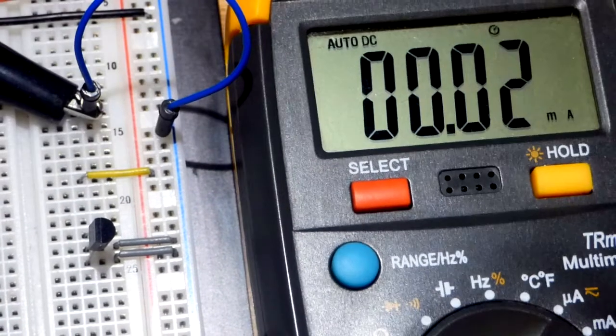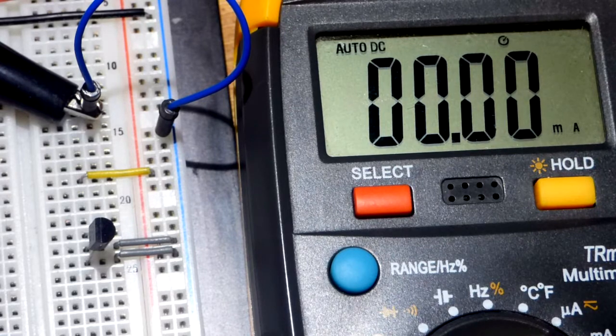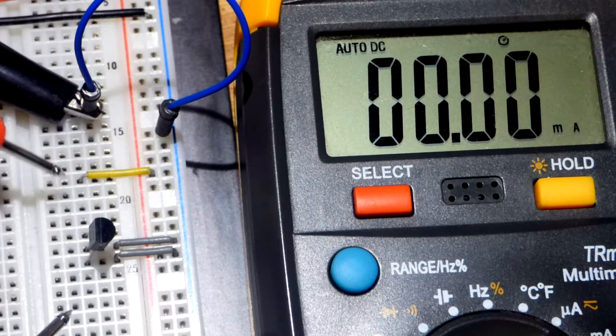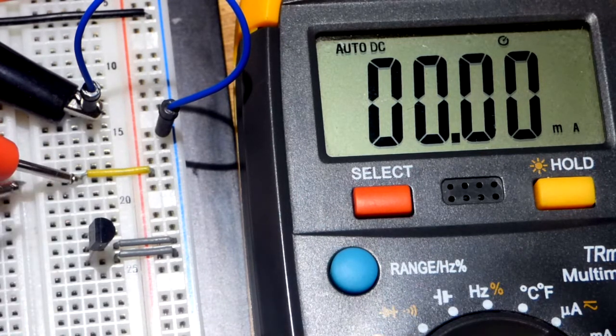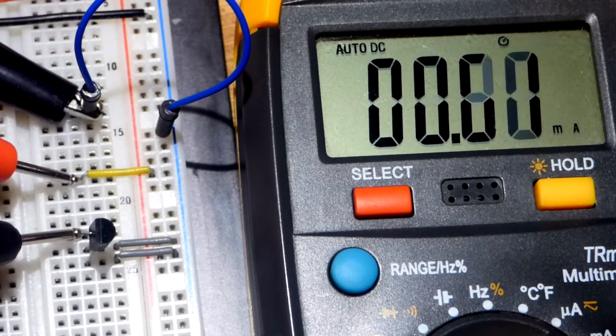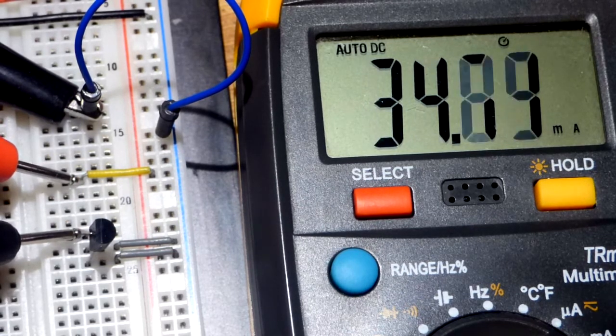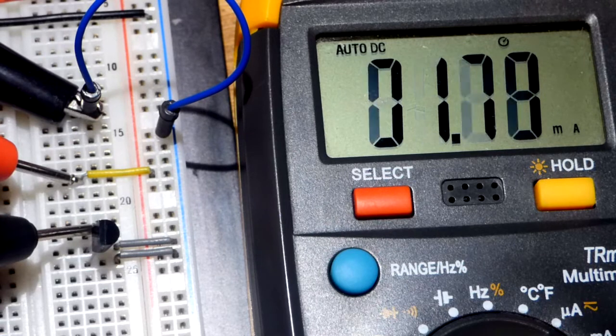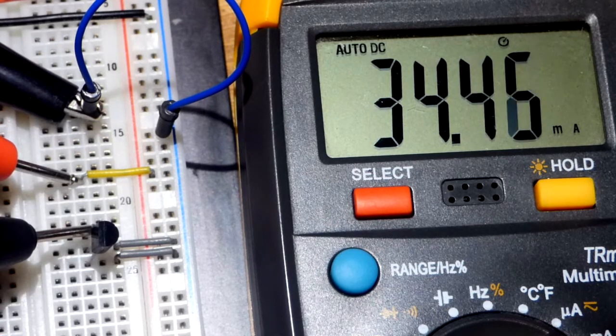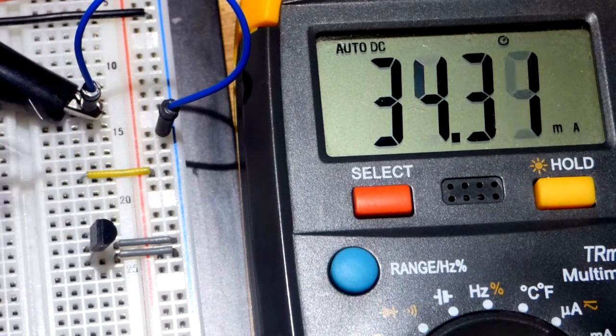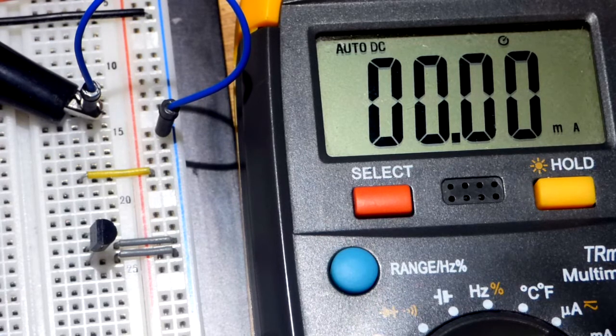Now we're going to measure current again, and I did limit current from this power supply. We got looks like about 34 milliamps of current. That's for 3 volts. Let's go to 4.